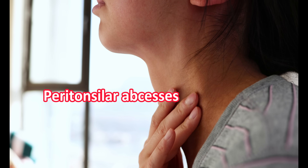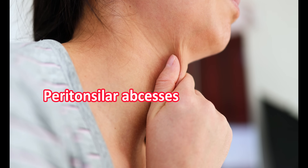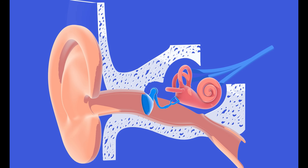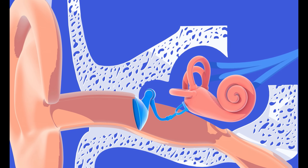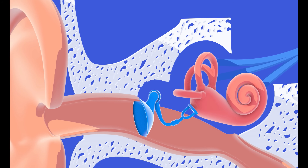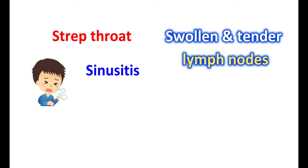Peritonsillar abscesses may result in severe throat pain, a muffled voice, and difficulty in opening the mouth, along with a high fever. Another complication is otitis media, where the infection spreads through the eustachian tube, affecting the middle ear and producing ear pain, hearing loss, and fever. Untreated strep throat can also lead to sinusitis, where a secondary infection of paranasal sinuses can be observed, resulting in nasal congestion, facial pain, and headache. The infections may also spread to the lymph nodes, leading to swollen and tender lymph nodes.